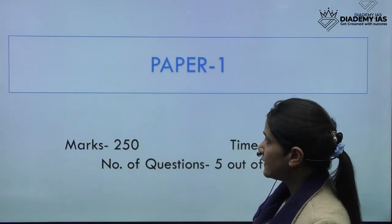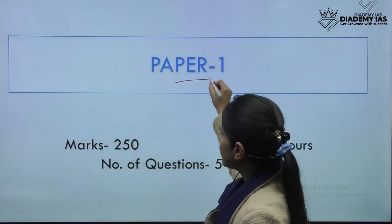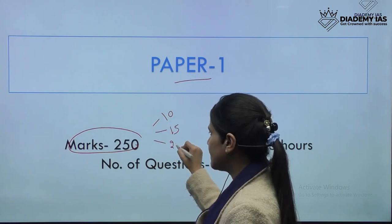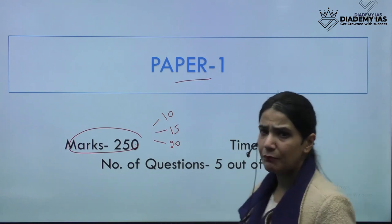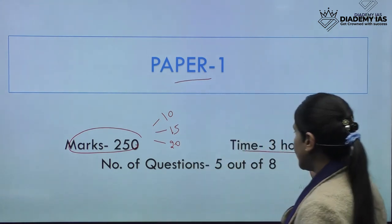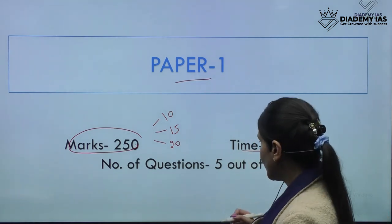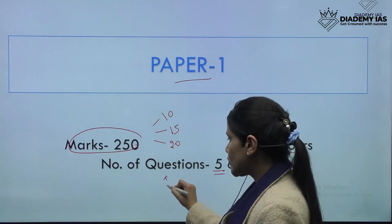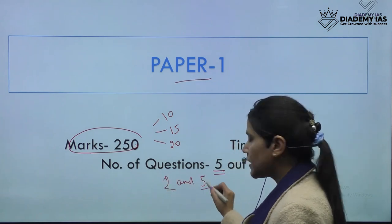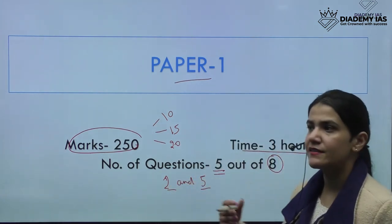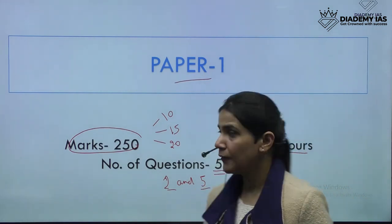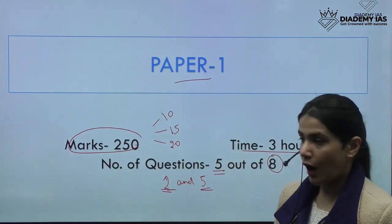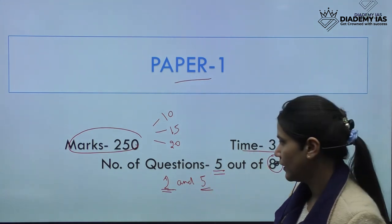Paper 1 is basically 250 marks. Some questions are 10 marks, some are 15 marks, and some are 20 marks. The time required for attempting Paper 1 is three hours. There are eight questions asked, out of which you have to attempt five. Usually, question number one and question number five are compulsory, and the remaining are your choice. You are expected to take at least one question from each section.